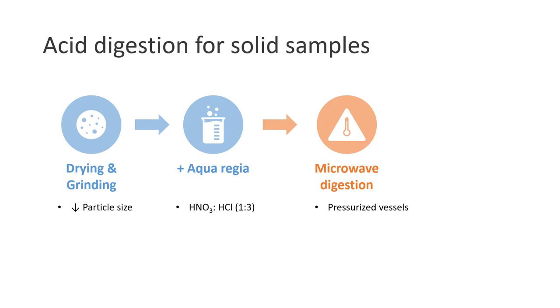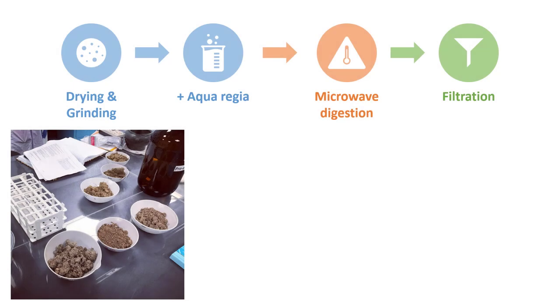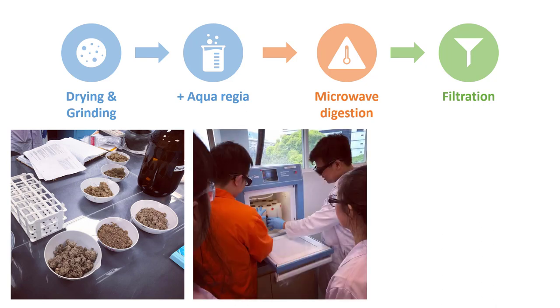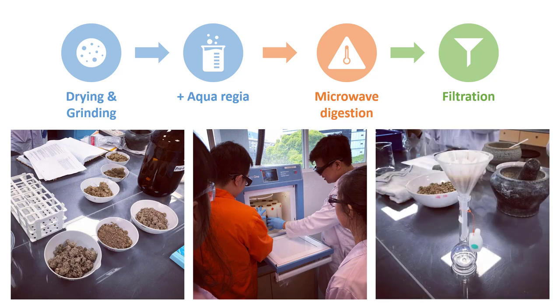This method enables us to effectively extract most elements from the soil sample. Finally, we need to remove any remaining solids using gravity filtration and a syringe filter to prevent clogging the sample introduction system in ICP. So this is how the sample preparation looks like: drying and grinding the sample to reduce the particle size, microwave digestion with hot acid to extract the elements from the soil sample, and filtering off any remaining solid to prevent clogging the sample introduction system.